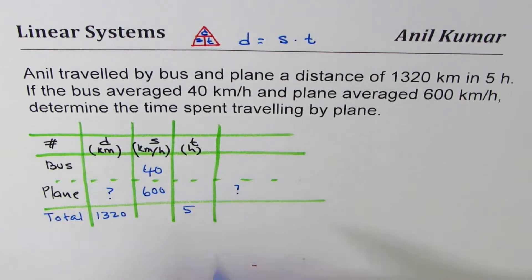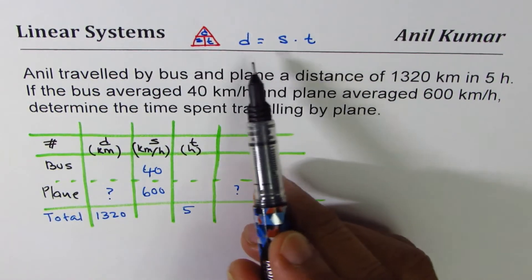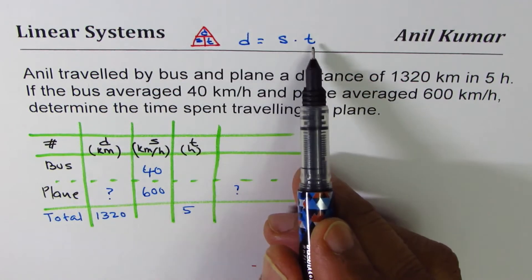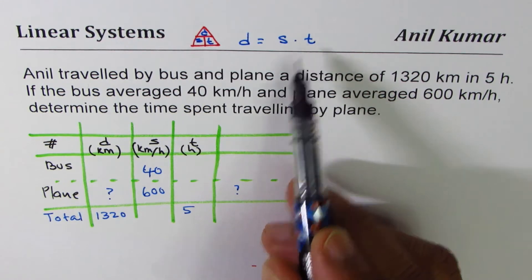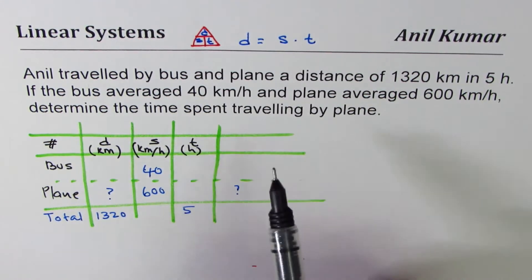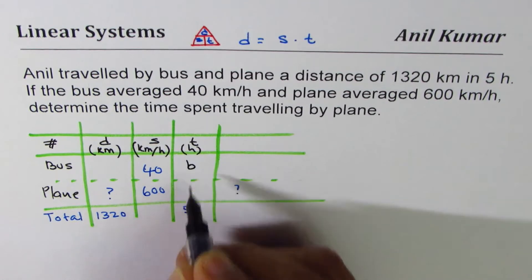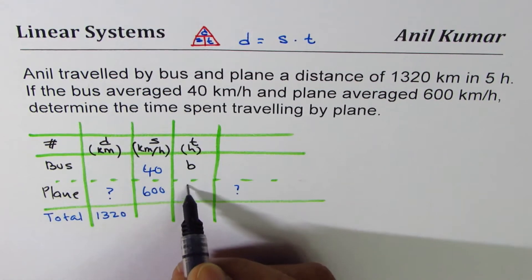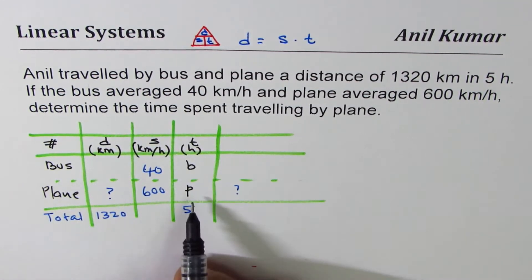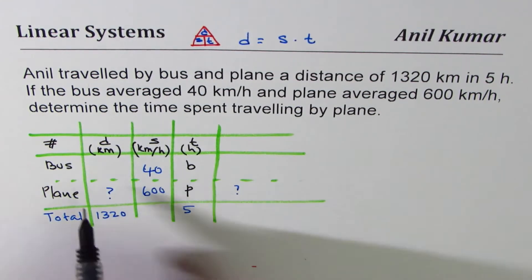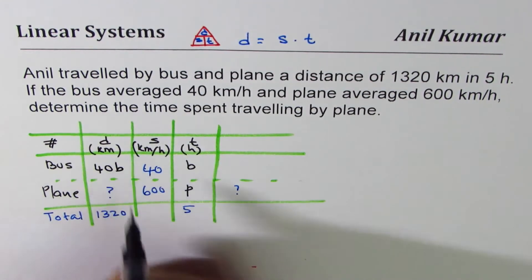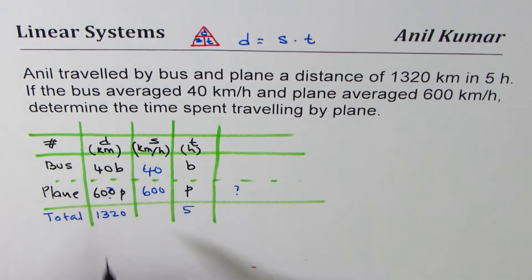Since the relation of distance, speed, and time is that distance is the product of speed and time, it's a good idea to define time as one of the variables. Let B be the time by bus and P be the time by plane. In that case, the distance traveled by bus is speed times time, so it'll be 40B, and for the plane it will be 600P.